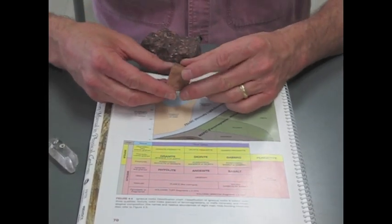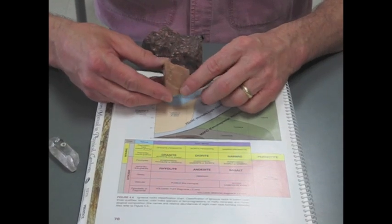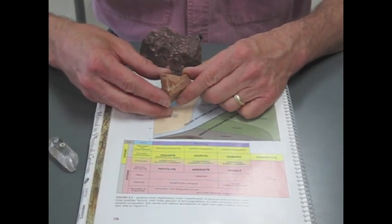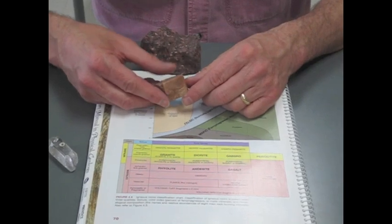The other thing that's giving its reddish color is the potassium feldspar, at least the material to make the potassium feldspar that's inside of this rock.